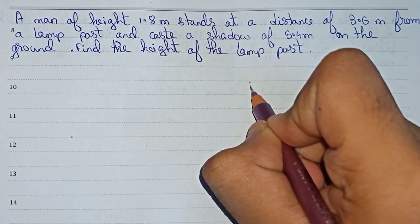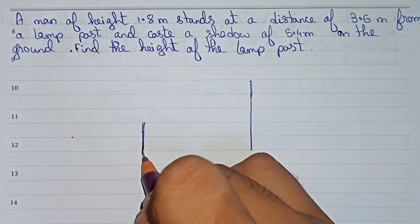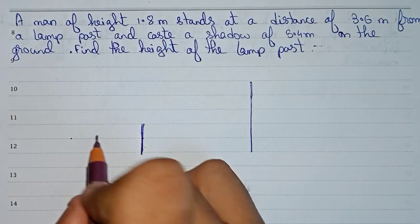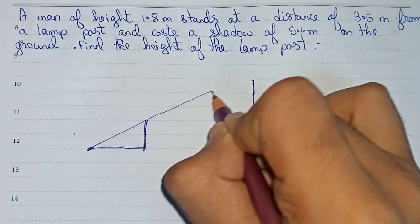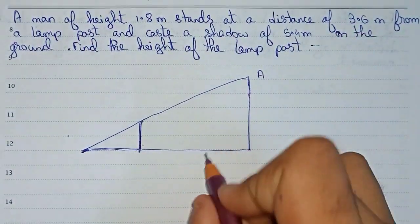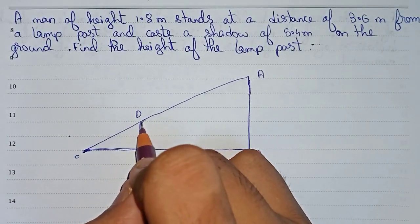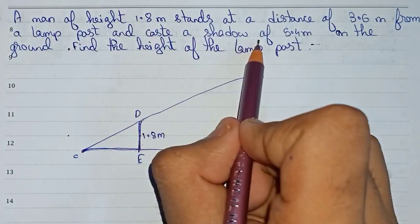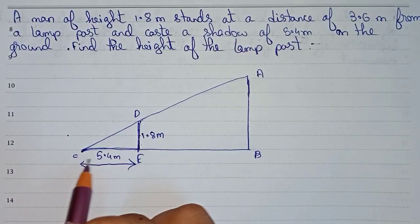So let this be the lamp post, and from here a man is standing at this position. This is the height of the man, which is given as 1.8 meter. Now it is given that the man casts a shadow of 5.4 meter. So let this be the length of the shadow. If we join this, the figure becomes like this. We name the points A, B, C, D, and E. The height of the man is 1.8 meter, and the shadow distance is 5.4 meter.